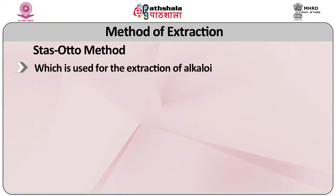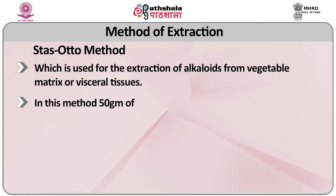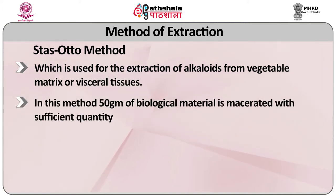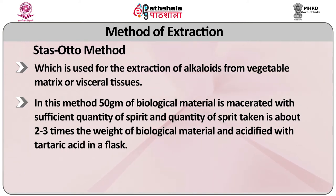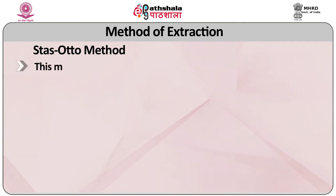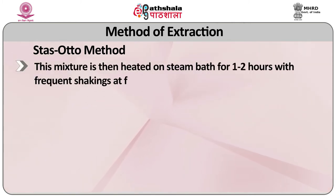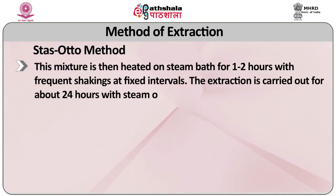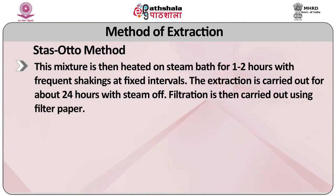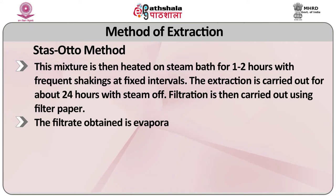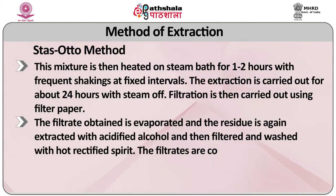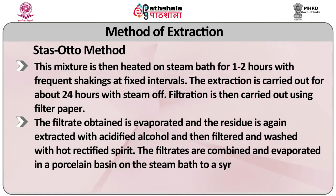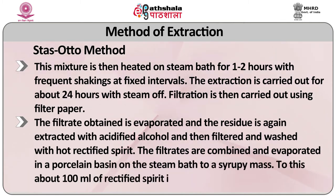Another method of extraction is the Stas-Otto method, which is used for the extraction of alkaloids from vegetable matrix or visceral tissues. In this method, 50 grams of biological material is macerated with a quantity of spirit approximately 2–3 times the weight of the biological material and acidified with tartaric acid. This mixture is then heated on a steam bath for 1–2 hours with frequent shaking at fixed intervals. The extraction is carried out for about 24 hours with the steam off. Filtration is then carried out using filter paper. The filtrate obtained is evaporated and the residue is again extracted with acidified alcohol, filtered and washed with hot rectified spirit. The filtrates are combined and evaporated in a porcelain basin on the steam bath to a syrupy mass.